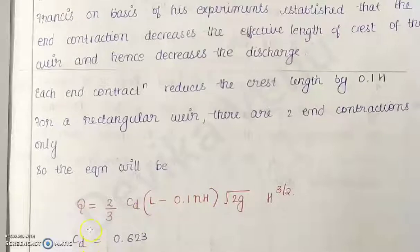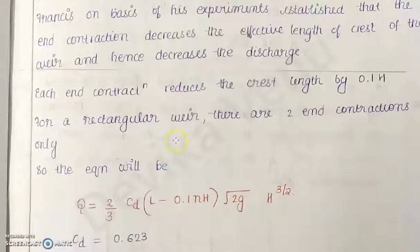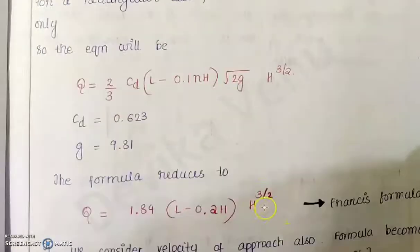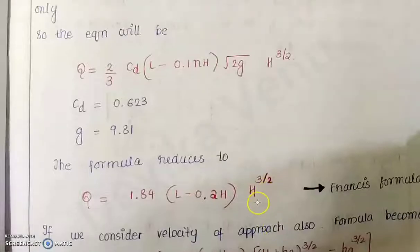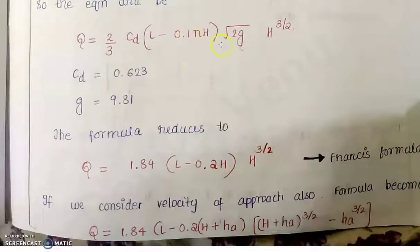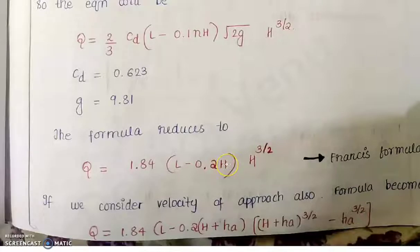Incorporating N contraction into the equation, the discharge becomes Q = (2/3) × C_D × (L − 0.1 × N × H) × √(2G) × H^(3/2). When considering the velocity of approach, capital H becomes H + H_A, and the H^(3/2) term is replaced accordingly.